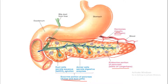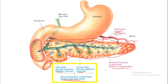The exocrine portion of the pancreas includes the acinar and ductal cells. Ductal cells secrete an aqueous solution rich in HCO3⁻, and acinar cells secrete digestive enzymes. So in summary: the endocrinal portion releases insulin and glucagon into the blood, while the exocrine part consists of ductal cells secreting sodium bicarbonate solution and acinar cells secreting digestive enzymes.